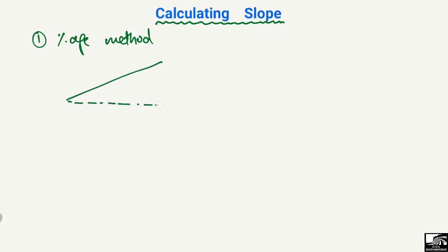For the percentage method, consider a road where the height is 10 meters and the horizontal length of the road is 30 meters. We want to find out the slope of this road using the percentage method.